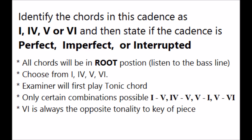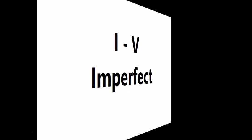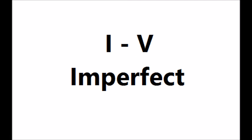Let's try some. I will play a tonic chord and then two more chords. Tell me what the two chords are and then the type of cadence. Remember to listen out for the bass line. Here is your tonic triad. [plays chords] That was 1 to 5 — an imperfect cadence.